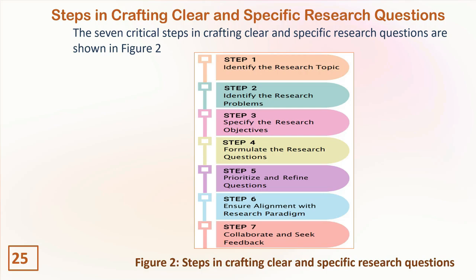The seven steps are: step one — identify the research topic; step two — identify the research problem; step three — specify the research objectives; step four — formulate the research questions; step five — prioritize and refine questions; step six — ensure alignment with design paradigms; and step seven — collaborate and seek feedback.